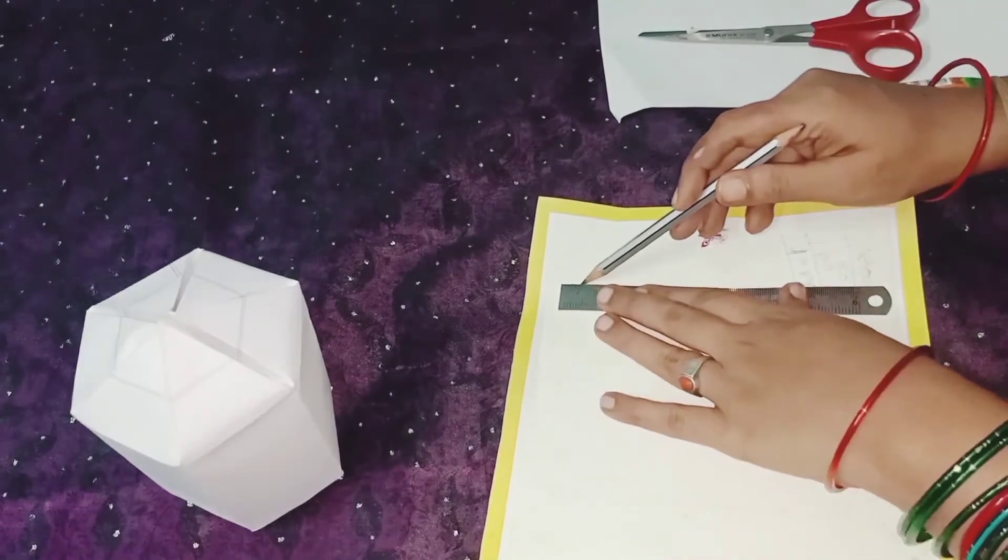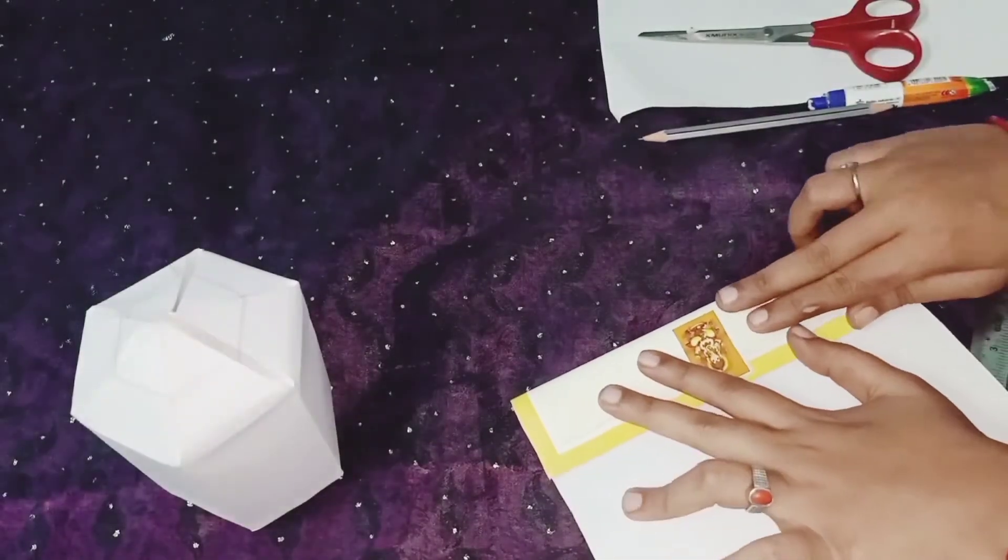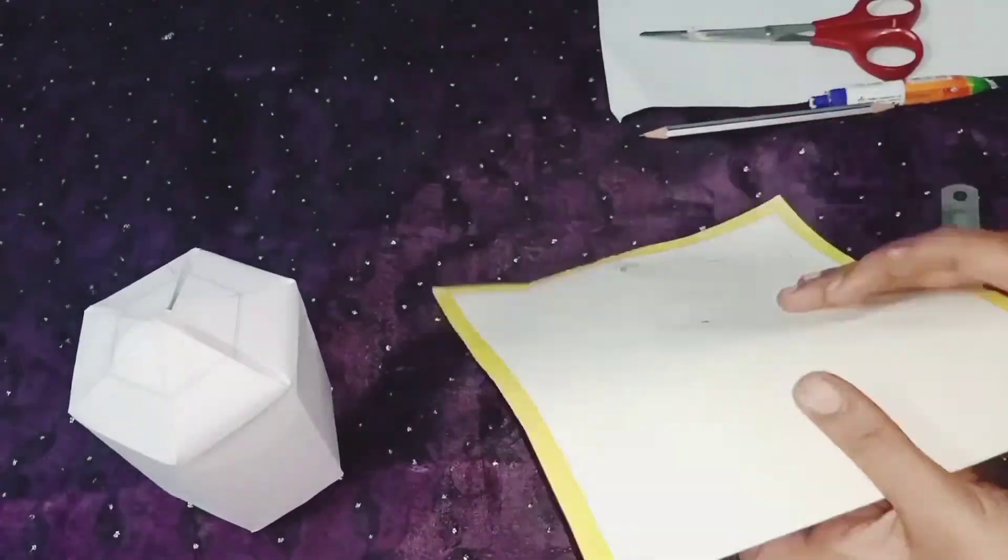Then I draw 6 straight lines like this. Now I fold the paper by using the lines.